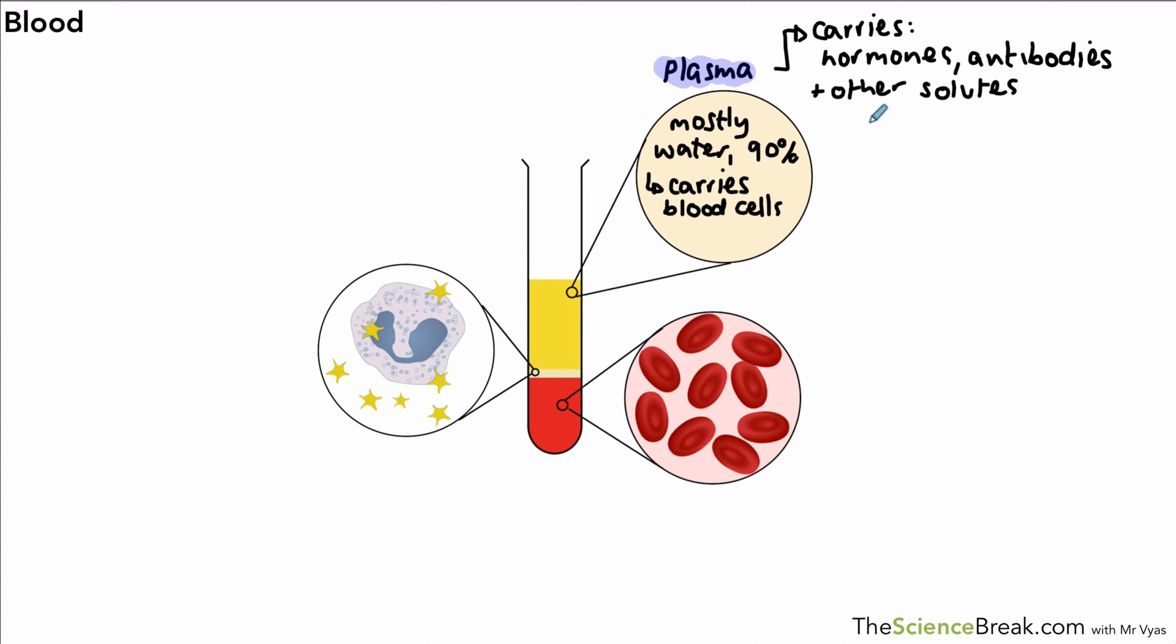Solutes are things that are dissolved, and they would include nutrients which come from our digested food. A common example of the nutrients is something like glucose or amino acids that have come from food that you have eaten. It also transports other substances: carbon dioxide and urea, and both of these are examples of waste products. So that's the plasma and the main roles for what it does.